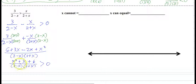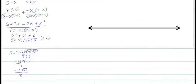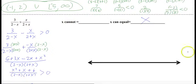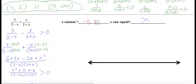Simplifying gives us x squared plus x plus 6, all over 2 minus x times 2 plus x, greater than 0. The top is not factorable, so we use the quadratic formula on it and find a nonreal result. Since we have a nonreal, x can equal nothing from the numerator — no blue open dots. But the denominator gives us x cannot equal 2 and x cannot equal negative 2, so open dots at those values.